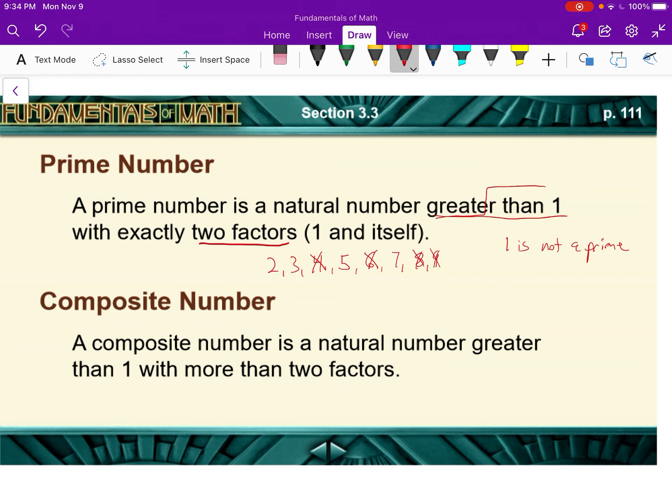9? No. 10? Nope. 11? And we'll list a few more: 13, 17, 19, 23, 29, 31, 37. And there's actually an infinite number of primes.